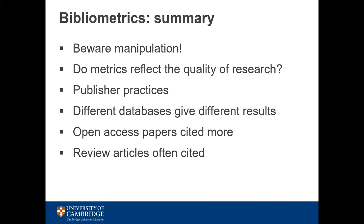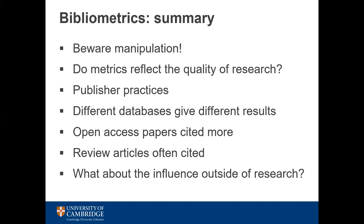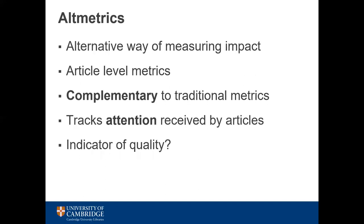This is where altmetrics come in. Altmetrics are a relatively new way of measuring non-traditional forms of impact. They are article-level metrics and are intended to be complementary to the traditional citation-based analyses. Altmetrics track the attention received by individual articles using unique IDs such as DOI, PubMed ID, Archive ID or ORCID.